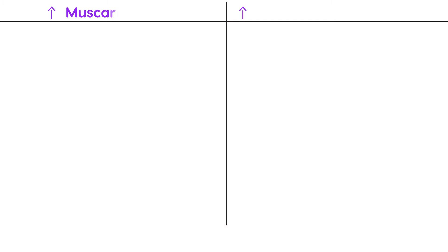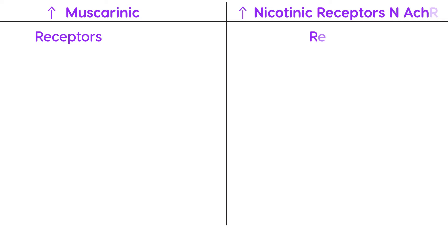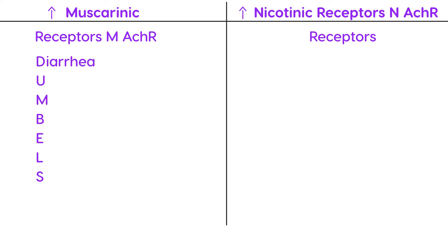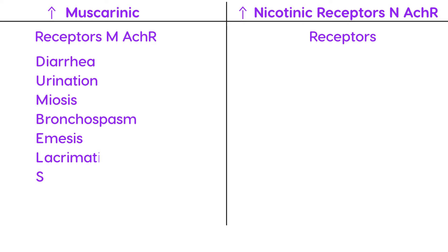Symptomatology breaks into two categories. First, overstimulation of muscarinic receptors. There's a mnemonic: D for diarrhea, U for urination, M for miosis (constriction of the pupil), B for bronchospasm, E for emesis or vomiting, L for lacrimation or excess tearing, and S for salivation.